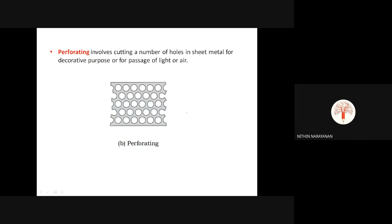The next operation is perforating. Perforating is a type of sheet metal operation which involves cutting a large number of holes in sheet metal for decorative purposes or for passage of light or air. This process is called perforating.